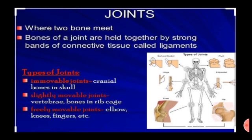Types of joints: Immovable joints — for example, cranial bones in the skull. Slightly movable joints — for example, the vertebrae and bones in the rib cage. Freely movable joints — for example, the elbow, knees, fingers, etc.